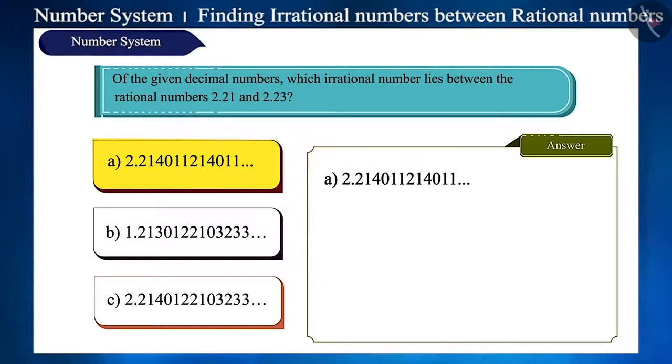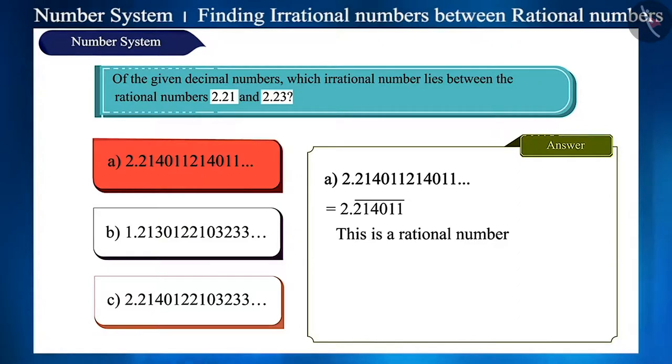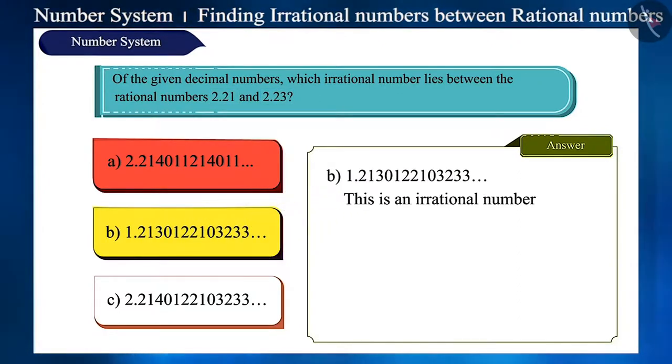The first option lies between these two numbers, but it is not irrational, it is a rational number. The second option is an irrational number, and it seems that it is between these two numbers if we just look to the right of the decimal.